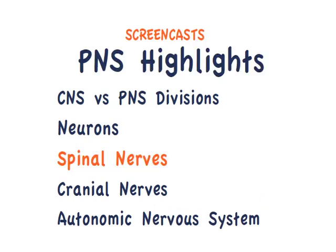This peripheral nervous system highlights screencast deals with spinal nerves. Recall that the peripheral nervous system consists of 12 cranial nerves and 36 spinal nerves in the dog and cat.